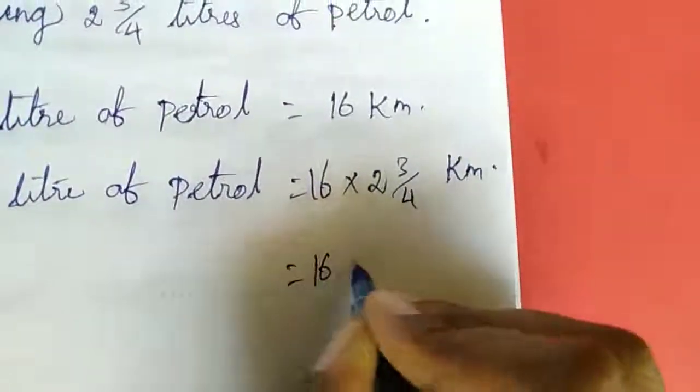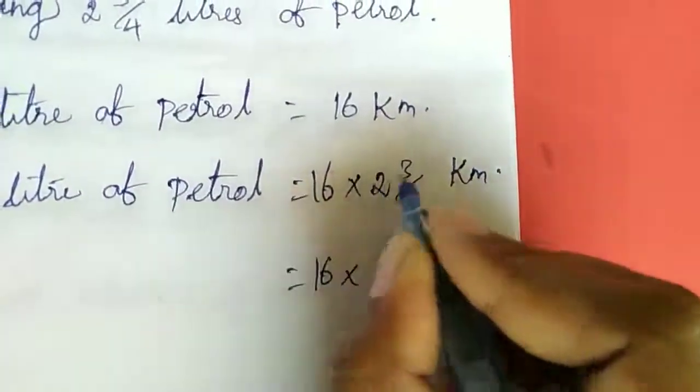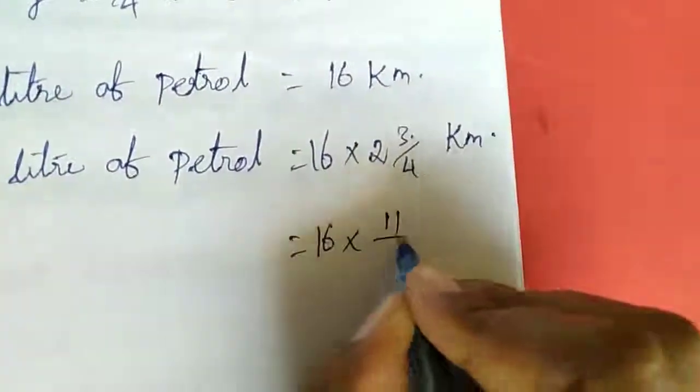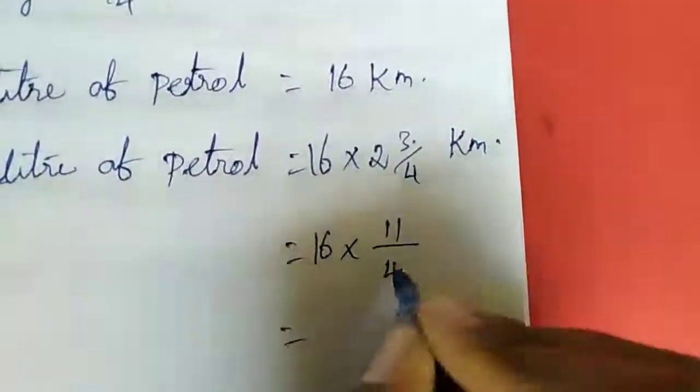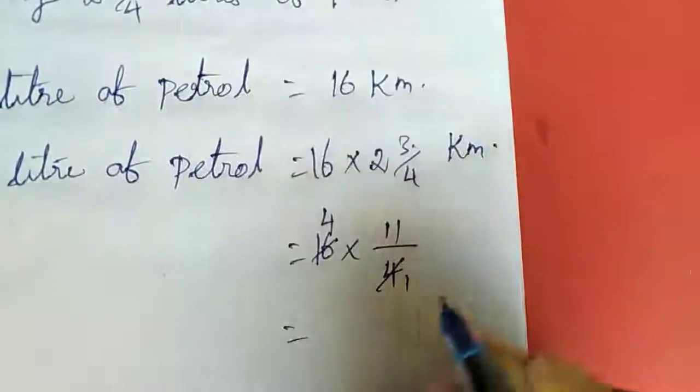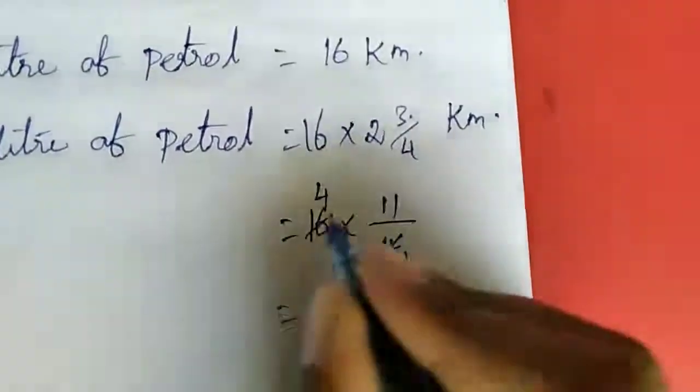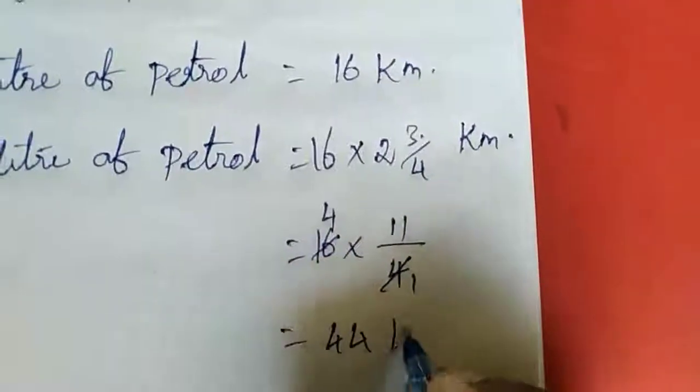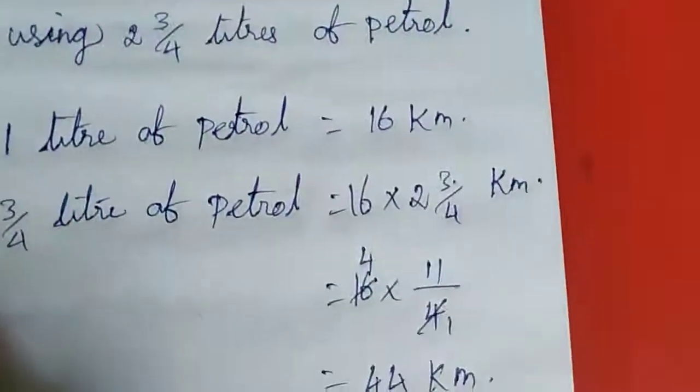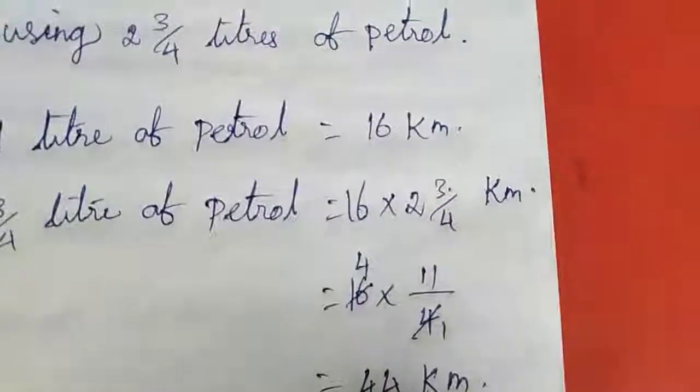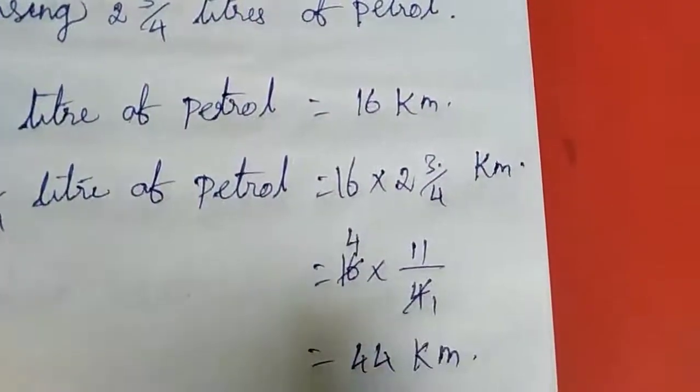So 16 times, convert 2 3/4 to improper fraction: 4 times 2 is 8, plus 3 is 11, so 11/4. We can cancel. 16 times 11 divided by 4 equals 4 times 11 equals 44 kilometers. So with 2 3/4 liters of petrol, we can travel 44 kilometers.